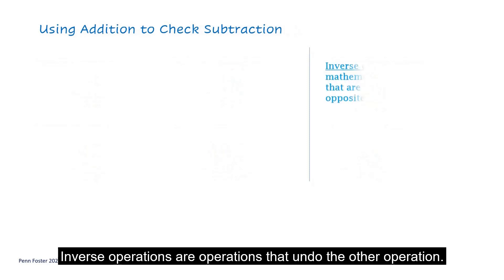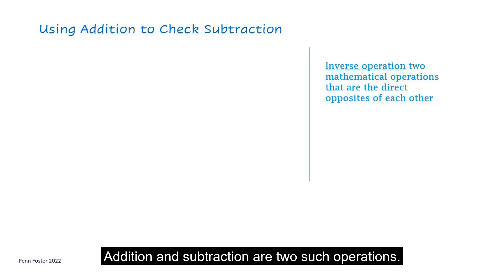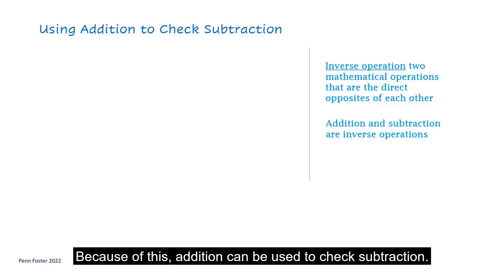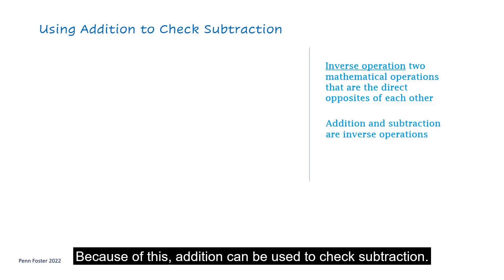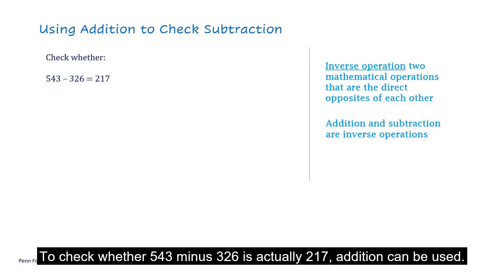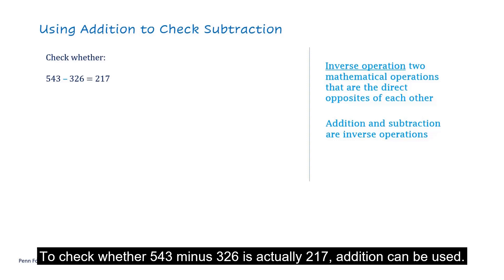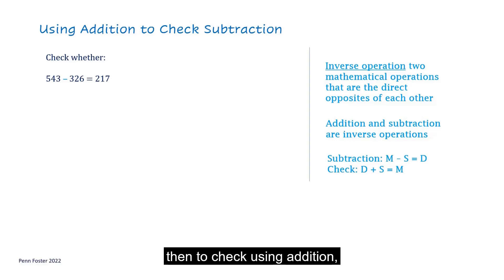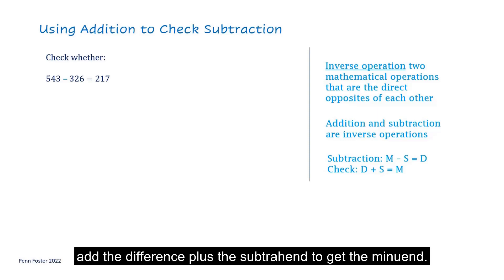Inverse operations are operations that undo the other operation. Addition and subtraction are two such operations. Because of this, addition can be used to check subtraction. To check whether 543 minus 326 is actually 217, addition can be used. Since subtraction is the minuend minus the subtrahend equals the difference, then to check using addition, add the difference plus the subtrahend to get the minuend.